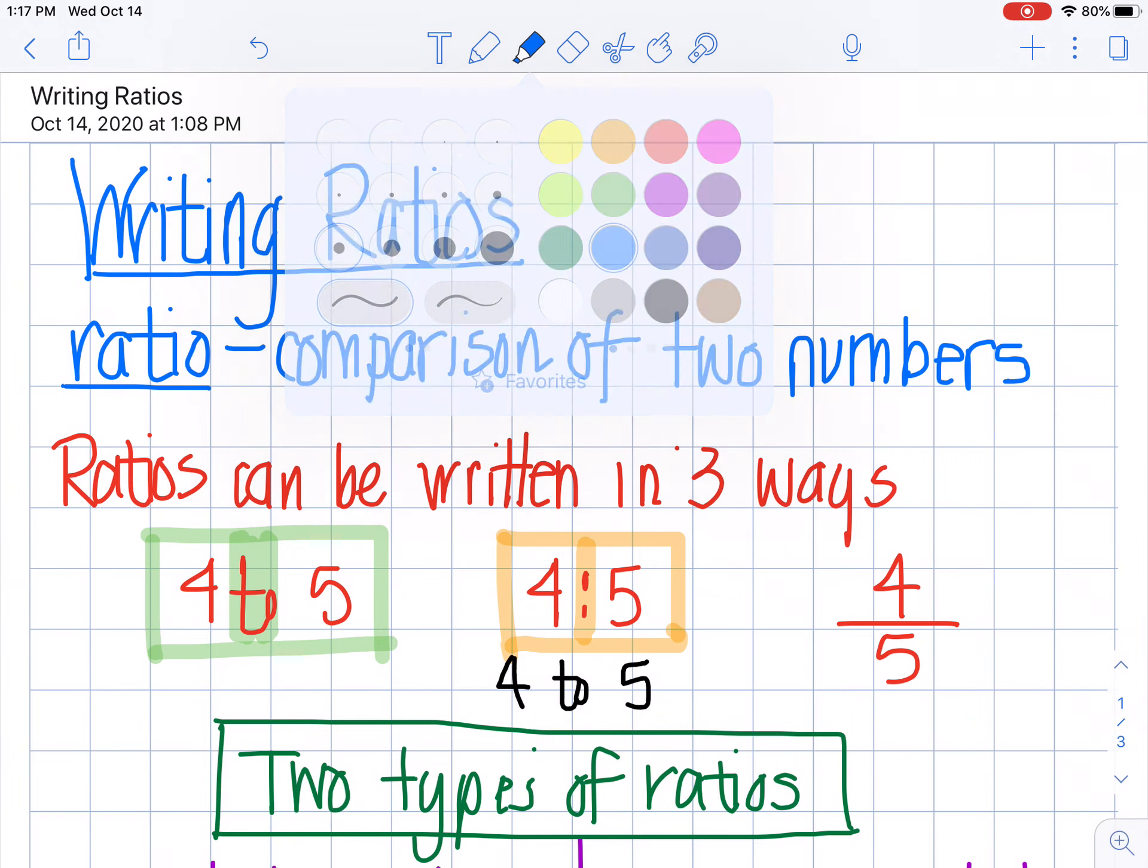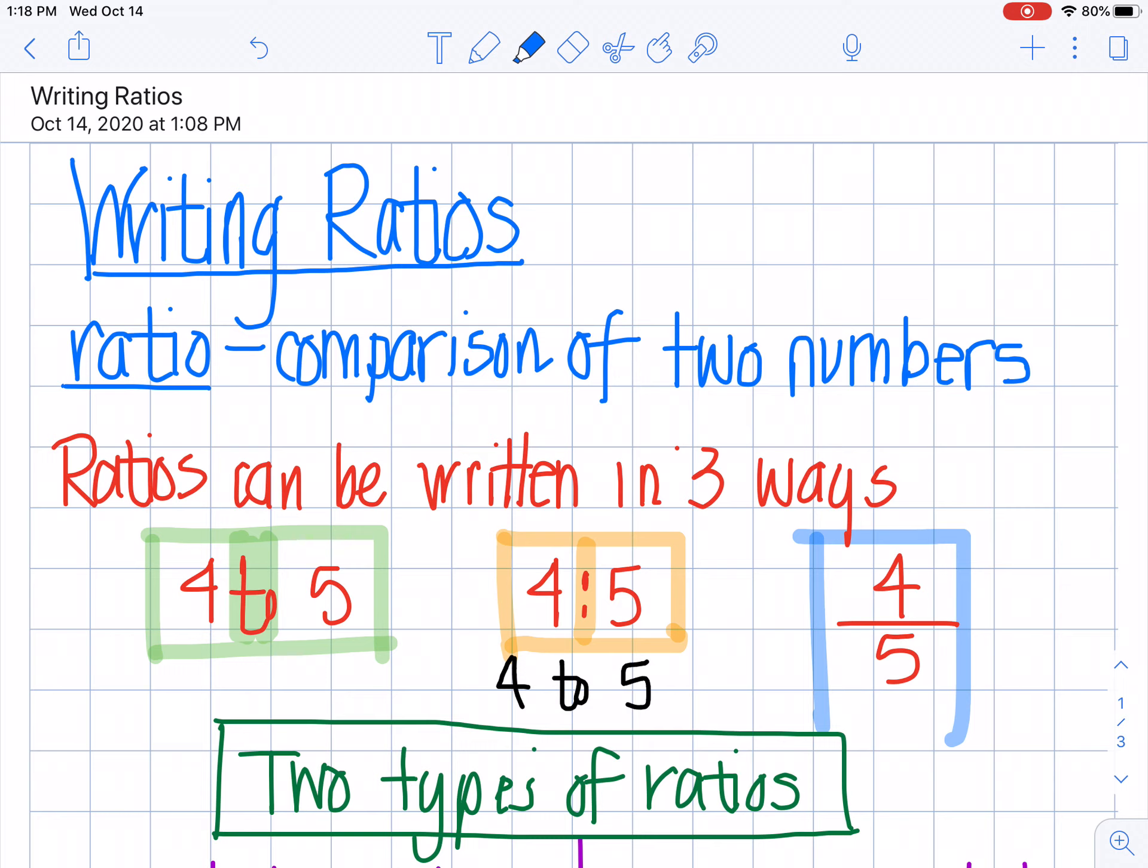The last one that I can do is four to five. I say this the same way, four to five, but I write it as a fraction. This is probably the most common way that we write ratios. They look like a fraction, but it really is a ratio. But know that you can see ratios with the word to or with the colon, and it means the same thing.